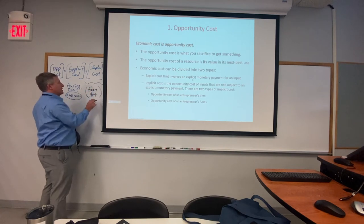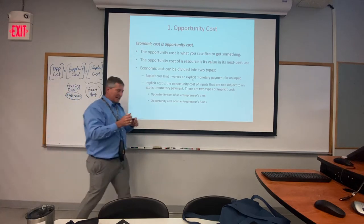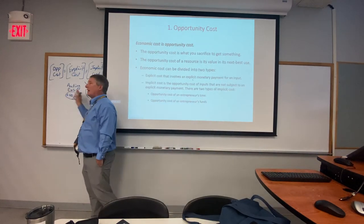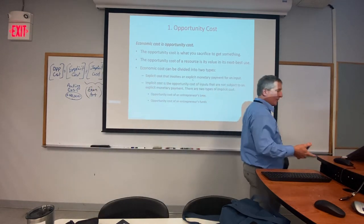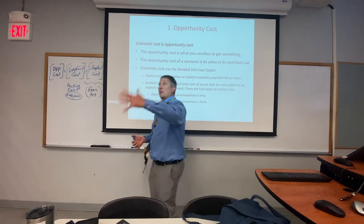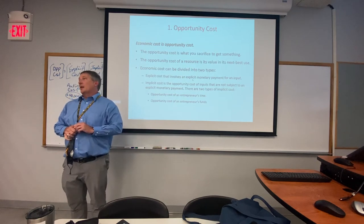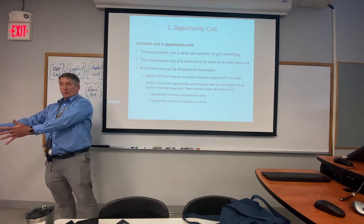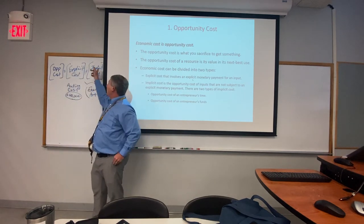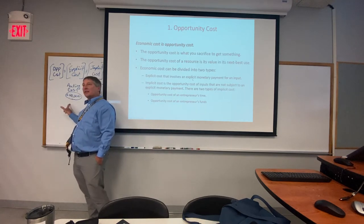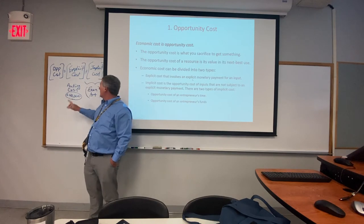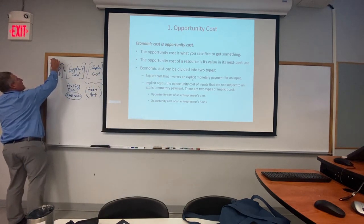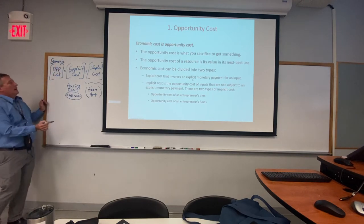This is where economics starts to differentiate itself from accounting. For accounting, we need a receipt. The fact that I could have been working can't be part of my business expenses for the IRS. The classic example is an English professor who opens a restaurant — they include their sixty thousand dollar lost opportunity of working at OU as part of the cost of running the restaurant. That's the implied cost, along with rent, fryers, and labor as accounting costs.